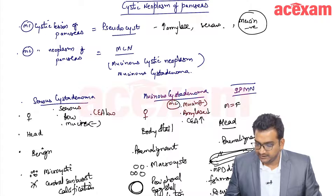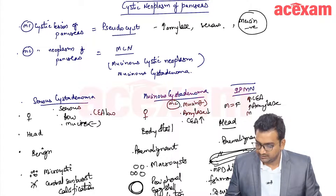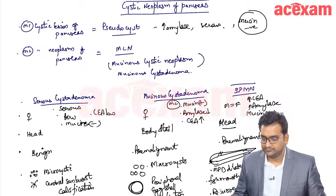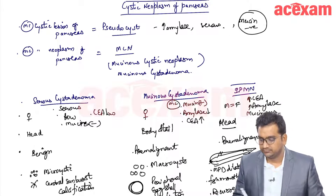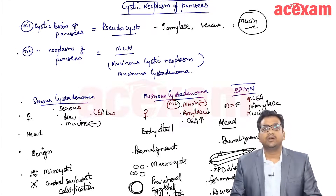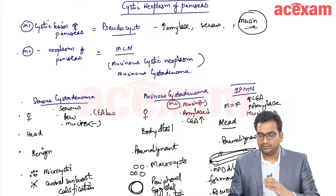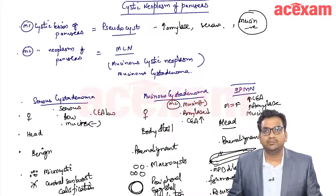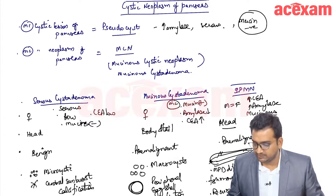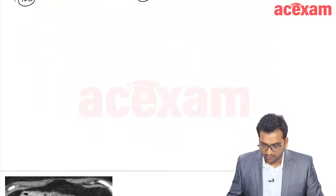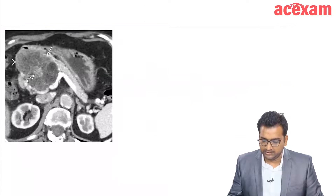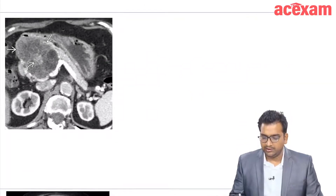In IPMN there will be raised CEA, raised amylase, and mucin present. These are the differences between the different types of cystic neoplasm of pancreas.